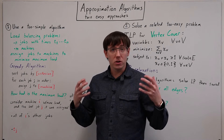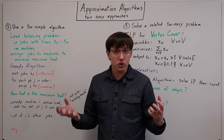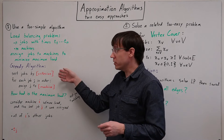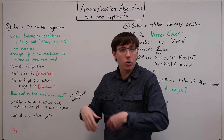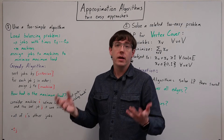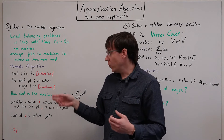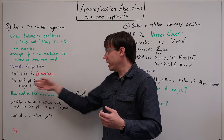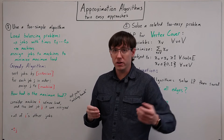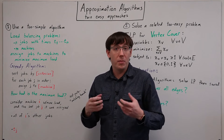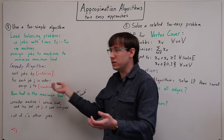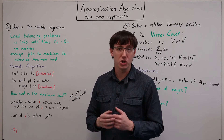If we apply our general structure of a greedy algorithm, we're going to start by sorting all of the jobs according to some criterion, and then we'll go through each job in the sorted order and make a decision about what to do with that job, assigning it to some machine.